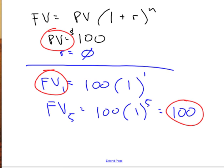How about five years? Well, guess what? If the interest rate is 0, your $100 is just going to sit in the bank. The future value after five years will be 100 times 1 to the fifth power, which is still $100. So, that should make sense as a limiting case. When the interest rate is 0, future value and present value are the same, no matter how many years you keep it there.